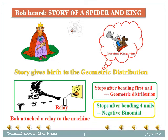Bob's machine was stopping too often. So Bob makes a change in his relay system so that the machine should stop after bending four nails. Now Bob's machine is making use of the negative binomial distribution.